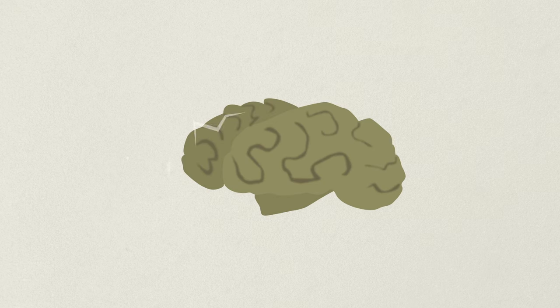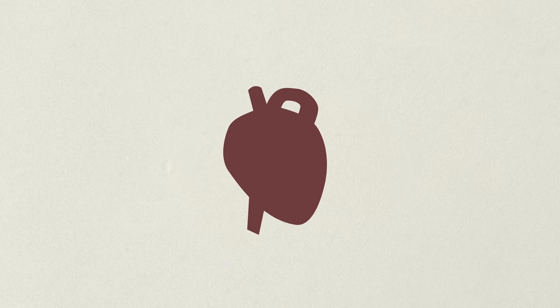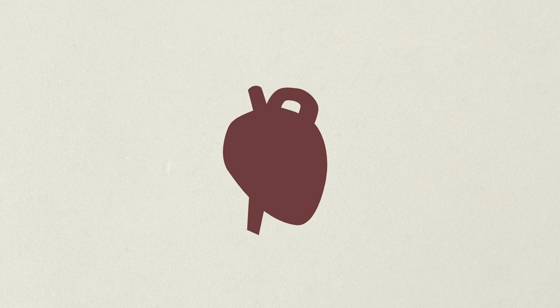You can even get creative and target that effect to certain systems, knocking down genes in just the brain or just the liver or just the heart. Figuring out what happens when you knock down a gene in a certain system can be an important step in figuring out what that gene does.